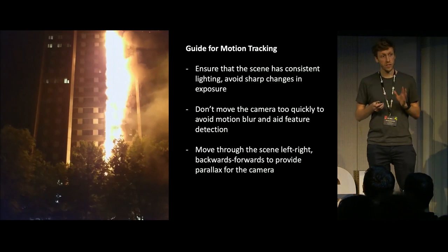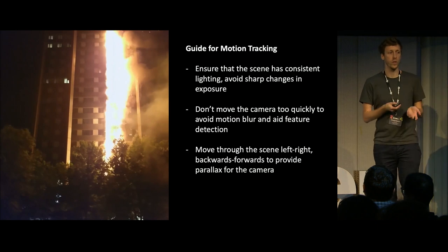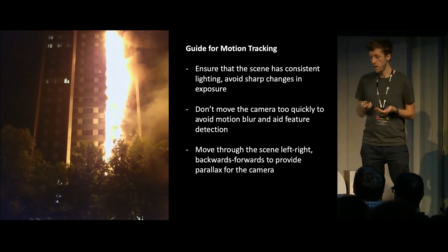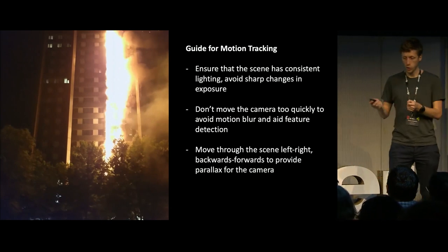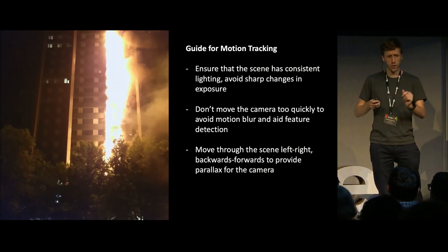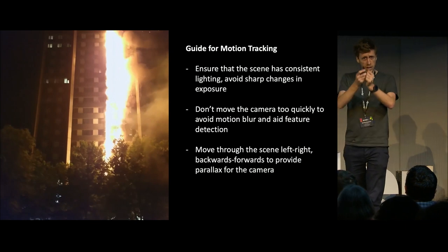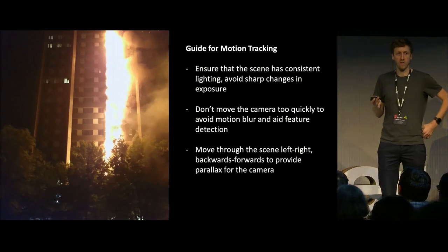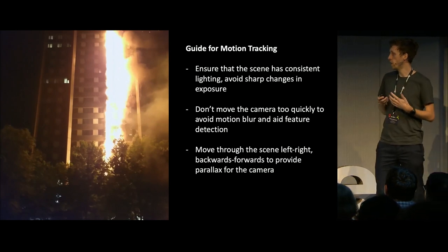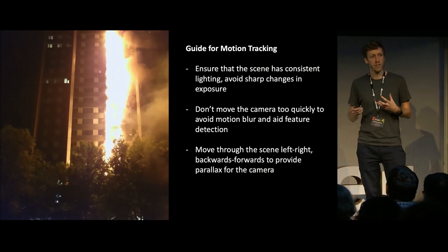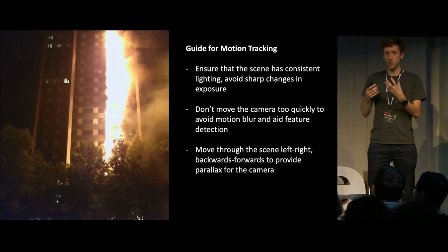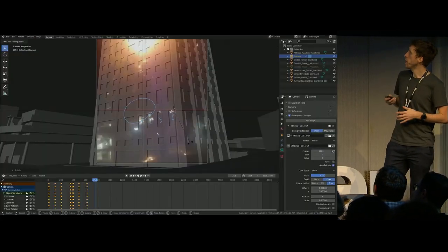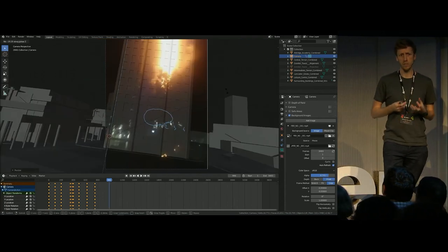There's a problem because this footage is not very suitable for tracking. A guide on how to motion track footage would advise ensuring consistent lighting, avoiding sharp changes in exposure, not moving the camera too quickly to avoid motion blur, and moving through the scene in multiple directions to capture parallax and understand the three-dimensionality of the space. But we don't have that luxury — the people who captured these images were scared and were being pushed around the site by police and emergency services. This is an object so dynamic and bright, captured at night, that it doesn't lend itself to motion tracking. So we find ourselves using very manual, painstaking techniques to motion track these frames.